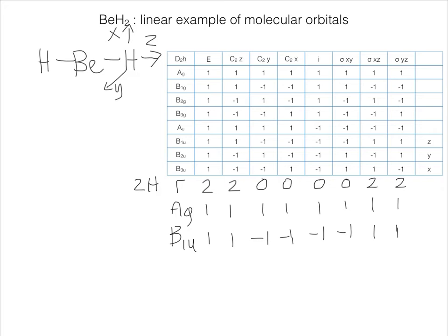So those are the molecular, the representations for the hydrogen atoms. Now we will need the representations for the beryllium atomic orbitals to see how they'll match up with our new molecular orbitals on the hydrogen. So for the valence shell, we need to consider orbitals 2s and 2p.